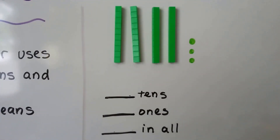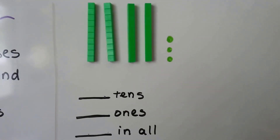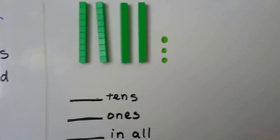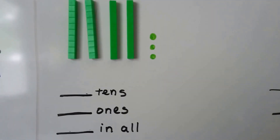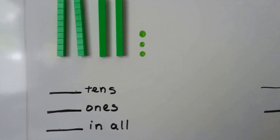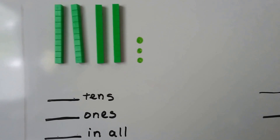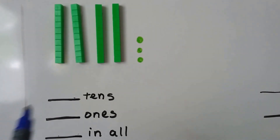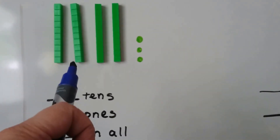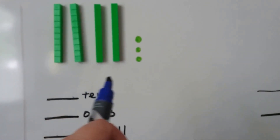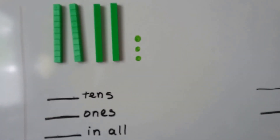How many tens do you see? Each long green bar is ten. We have one, two, three, four tens.